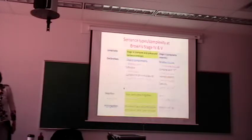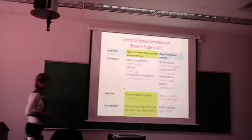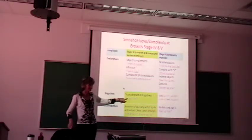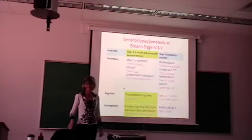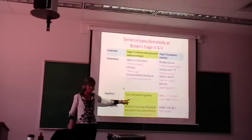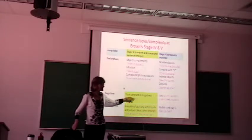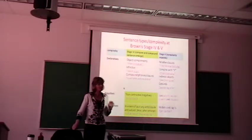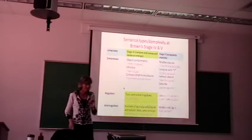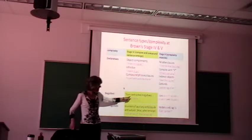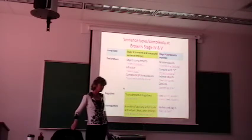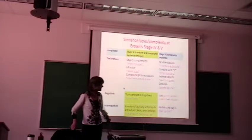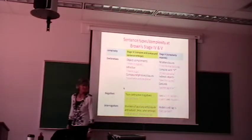At stage 4, this is when they use true contracted negatives. Now in this case, is the copula contracted or the negative? The negative. So the copula is uncontractable, right? But they use true contracted negatives. So if you have a child that uses do and not separately, and he says don't as well, you know he's actually at stage 4. As long as it's following the subject. And then stage 5, just more complex.